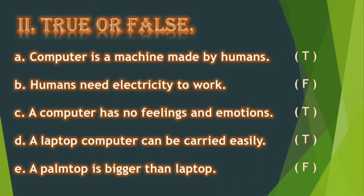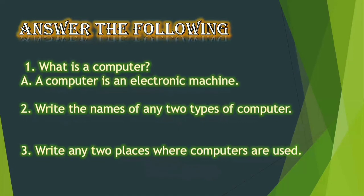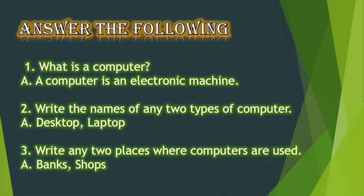Moving on to the next exercise: answer the following. Here are some questions; you have to give answers. First question: what is a computer? The answer is: a computer is an electronic machine. Second question: write the names of any two types of computers. You can write any two types — we will write desktop and laptop. The third question: write any two places where computers are used. You can write any two: banks and shops.